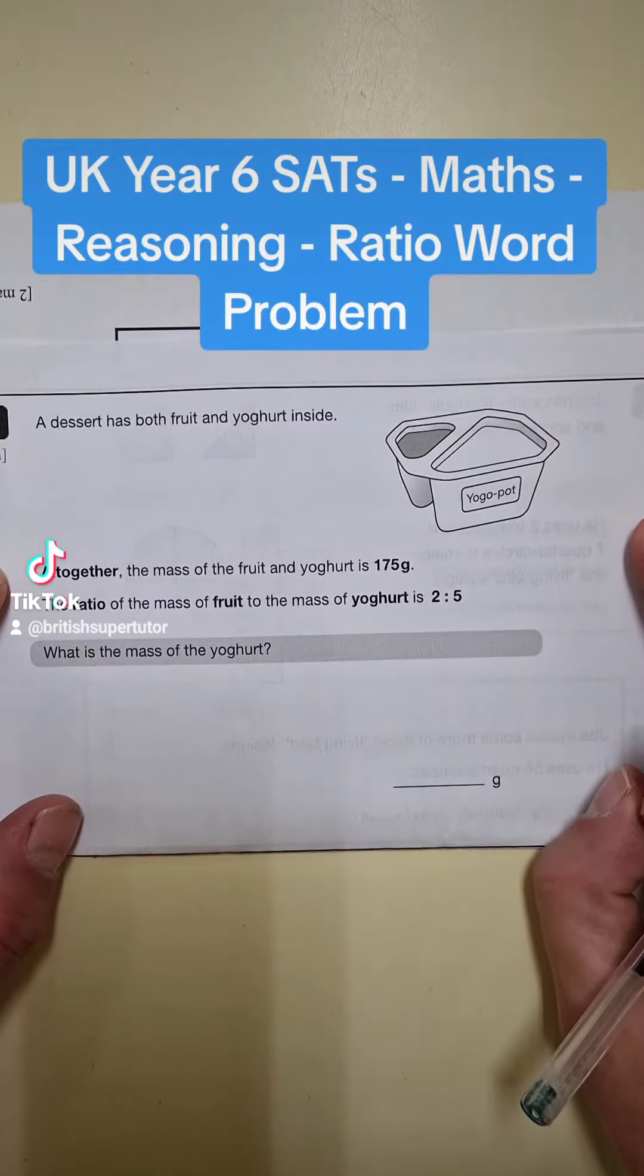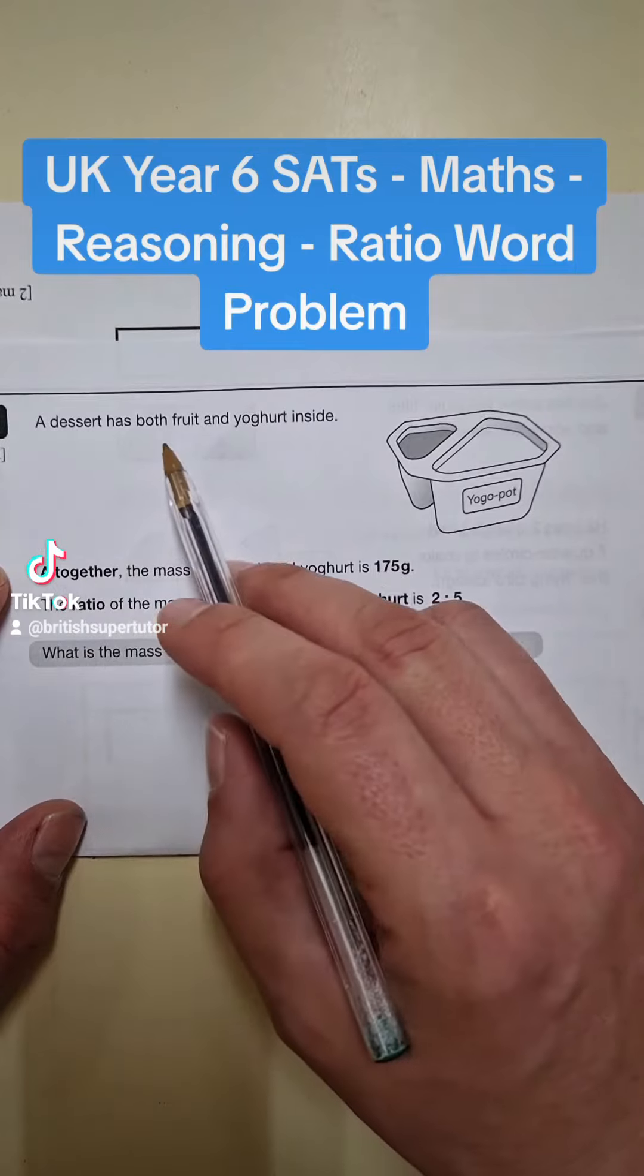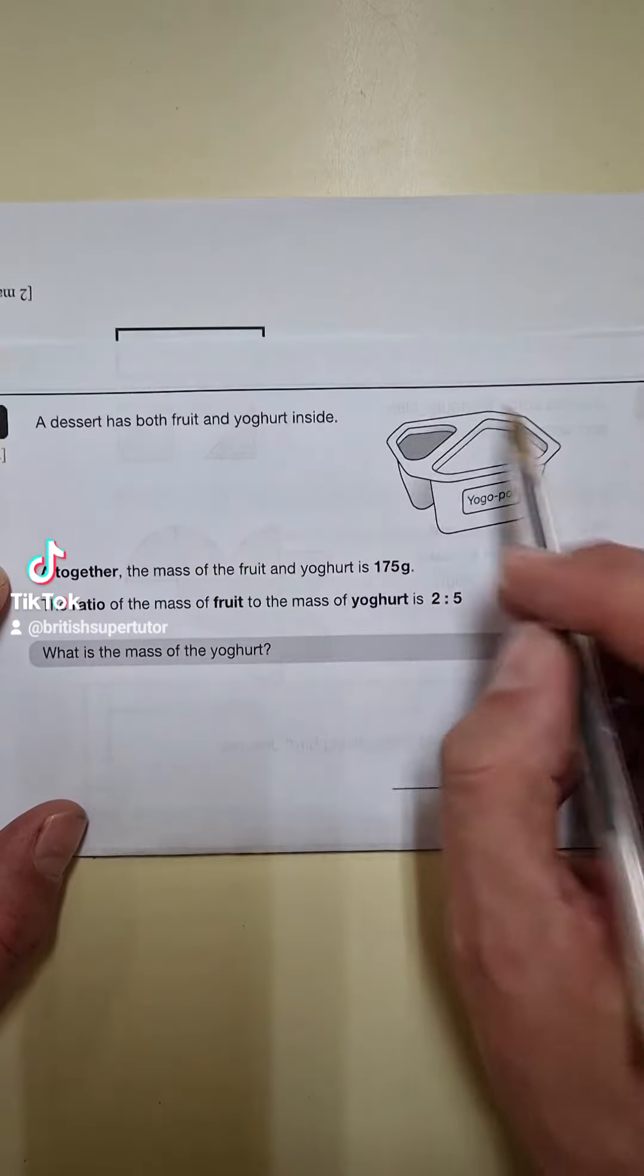Hello everybody, so today I'm going to teach you how to answer a question in the Key Stage 2 Stats reasoning paper. A dessert has both fruit and yoghurt inside, you can see here.